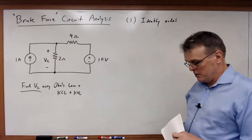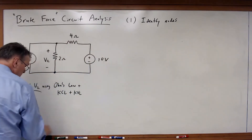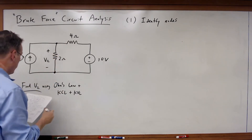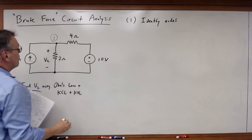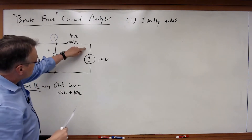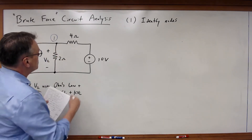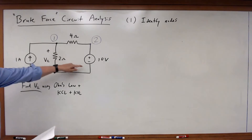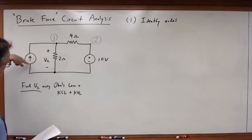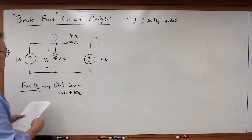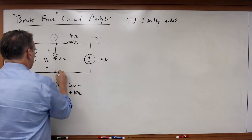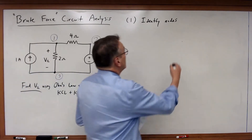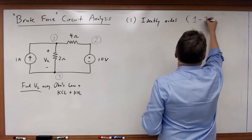How many nodes are in this circuit? In this case, I've got one node here that connects these three elements together — call that node 1. Then I've got a node here that connects the 4-ohm resistor to the 10-volt source — that's node 2. And then I've got one node here on the bottom that connects the 2-ohm resistor with the current source and the voltage source — that's node 3. So three nodes by inspection.